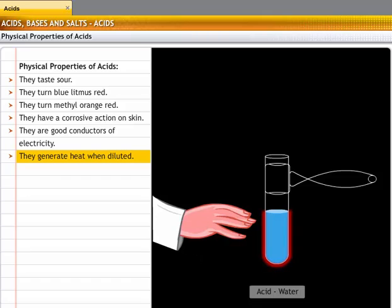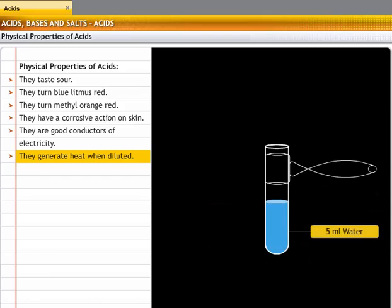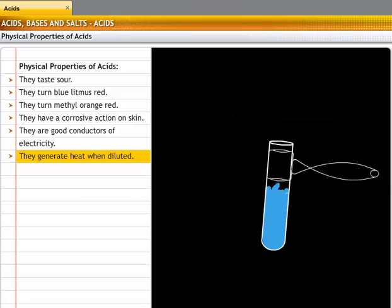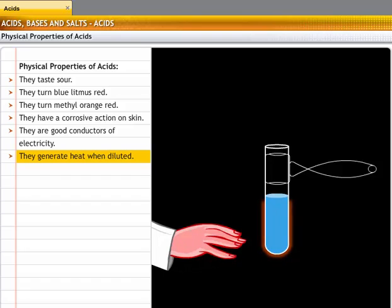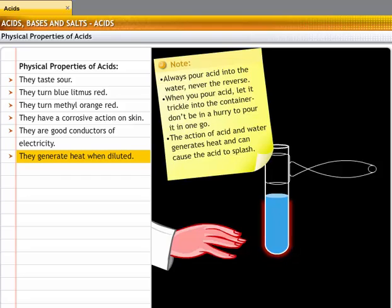This is because the action of acids with water is exothermic. Take 5 ml of water in a test tube and carefully add sulfuric acid to it. Now shake the test tube and touch its base. The base will feel hot, indicating that a reaction between acid and water is exothermic.